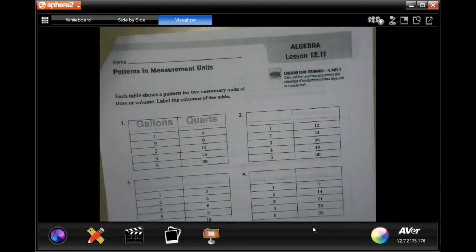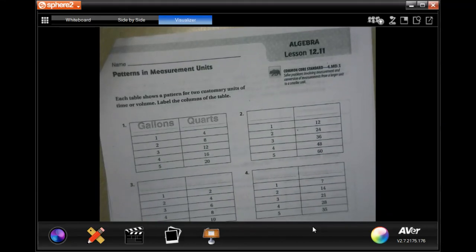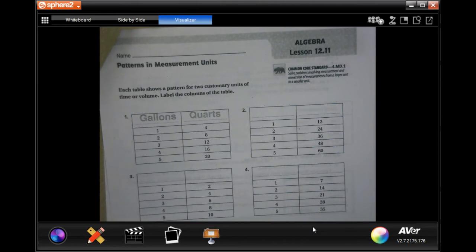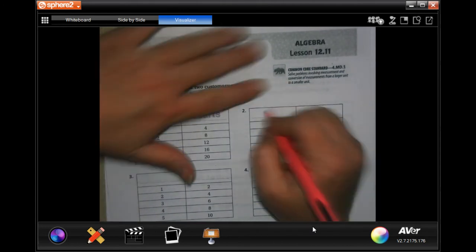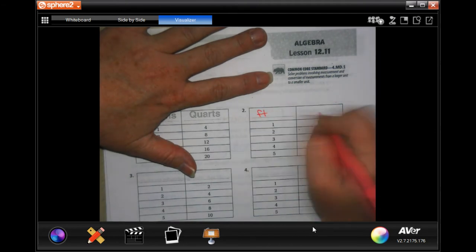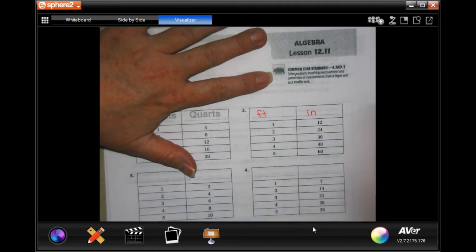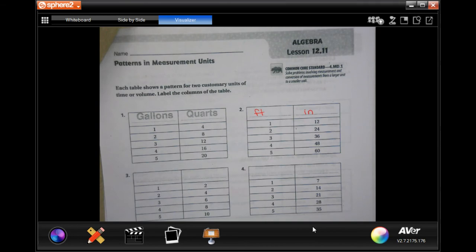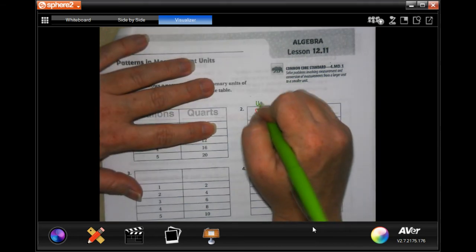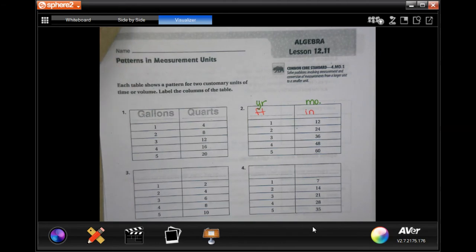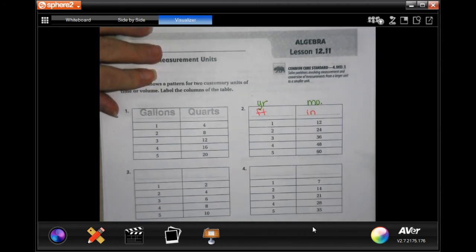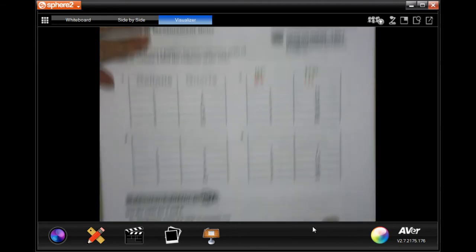Hey y'all, welcome to fourth grade Chapter 12 Lesson 11. We're going to get started. We're looking at something with a ratio of 1 to 12, so we could say one foot is 12 inches, we could say one year is 12 months. Anything that the ratio is 1 to 12.